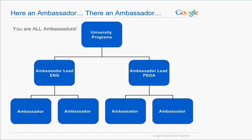We are the university programs team that heads up this program. We have lead ambassadors and ambassadors. Work with your team — we selected a lead ambassador to be a main point of contact, but all ambassadors should be in contact with our team and submit events with your Google contact. ENG is obviously engineering, and PSGA stands for Product Sales General and Administrative, which is basically everything at Google that's not engineering.